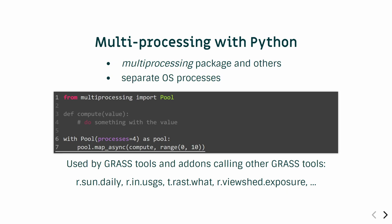The other type of parallelization I mentioned was multiprocessing in Python. Typically you would use the multiprocessing package, although there are other packages now. The difference here is that the multiprocessing package spawns separate operating system level processes, not threads. This is a simple example of how multiprocessing can be done — it's fairly straightforward. It's used in a couple of different tools in GRASS and also in add-on tools.